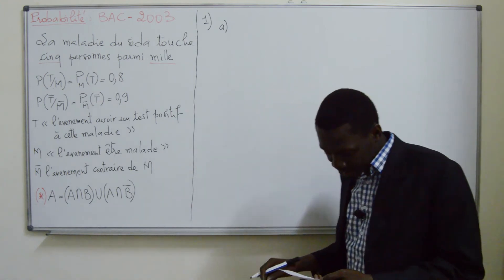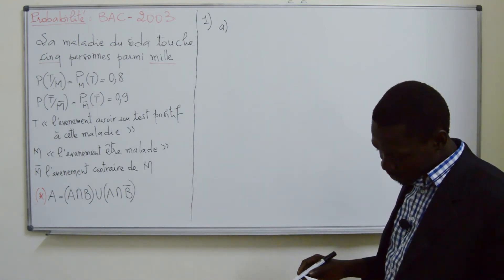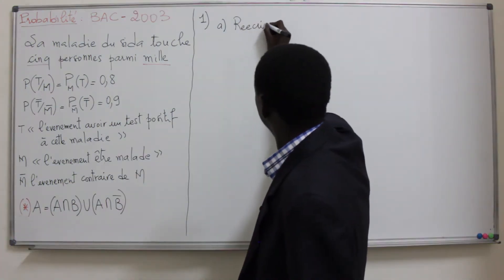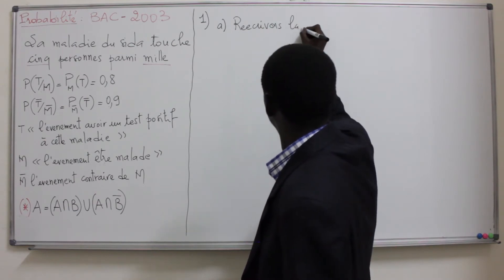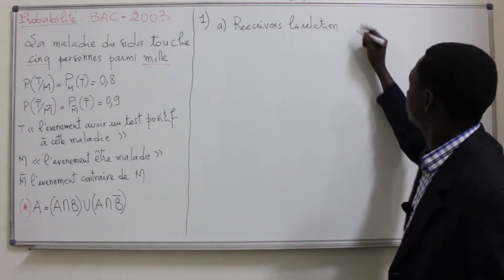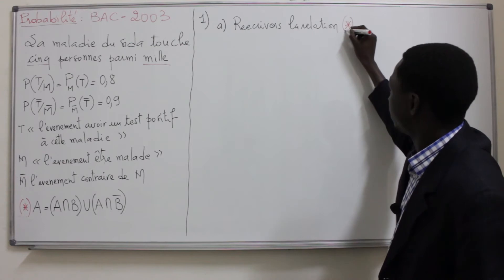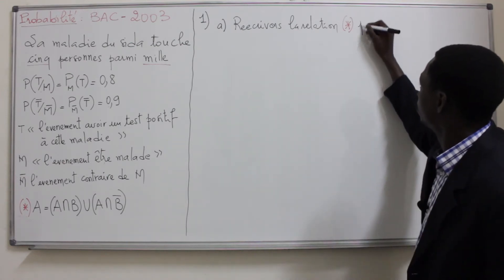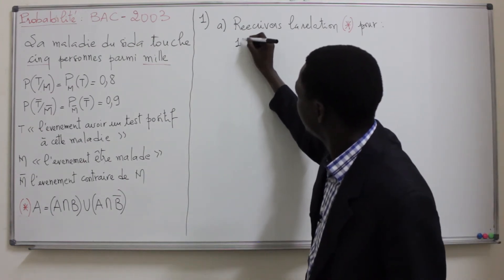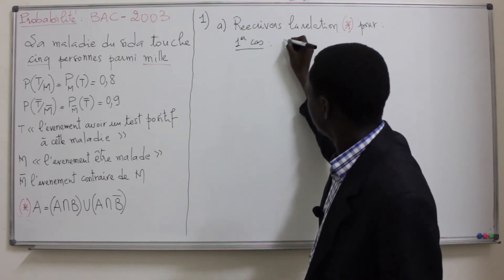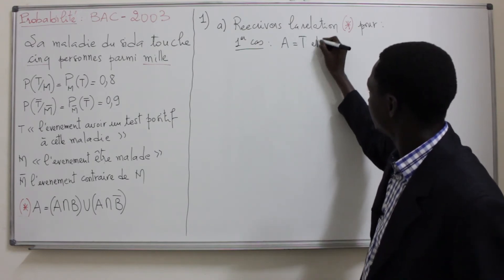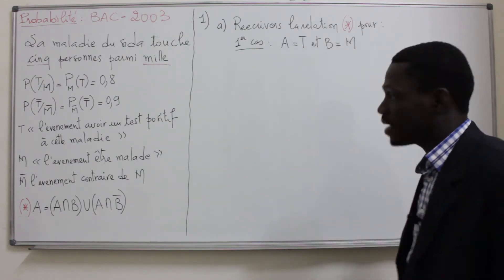Réécrivons la relation étoile. Premier cas: on dit que A = T et B = M.